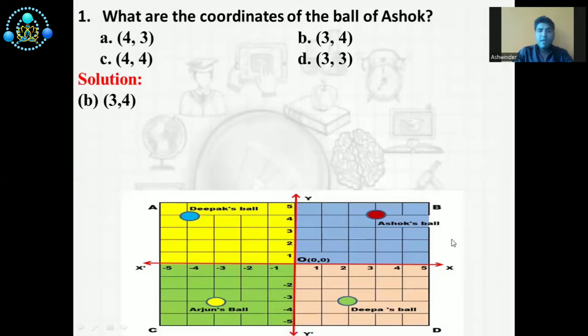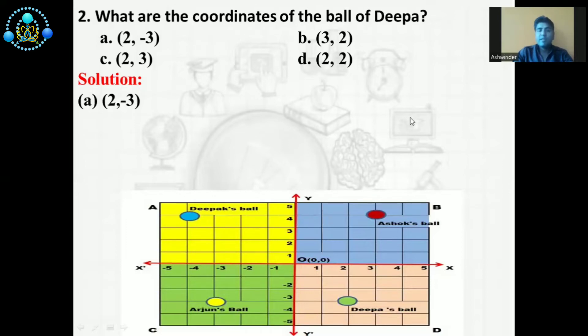You will see according to the question when we see Ashok's ball position, we can easily find the values. X is 3 and Y is 4. Now we will discuss the next question.